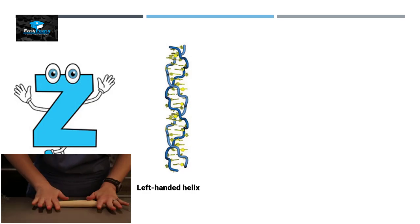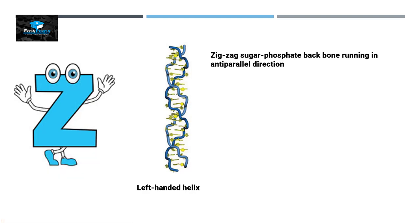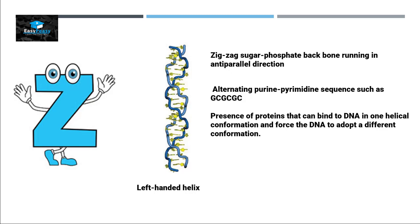Z form is called Z form because they have a zigzag sugar phosphate backbone running in antiparallel direction. They have zigzag form because of the sequence present in it, with alternating purines and pyrimidines on it, just like the example here is GC-GC-GC. The B form of DNA can take this Z form of DNA if proteins can bind to it in one helical conformation and force the DNA to adopt a different conformation.